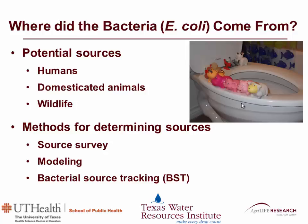Some of the methods that have been used over the years include source surveys, modeling, and bacteria source tracking, and they all have their pros and cons. Source surveys basically involve gathering data on animal numbers, and you can do that from the Ag Census data, population census, survey the number of septic systems and wastewater treatment plants in your watershed, and utilize that information to try to figure out your major sources of bacteria.